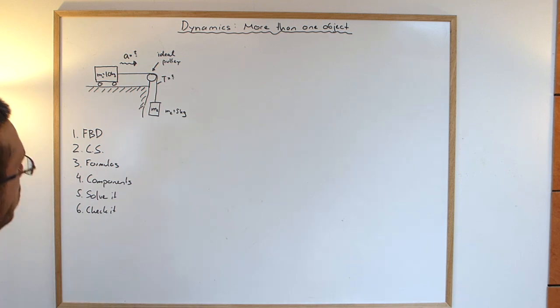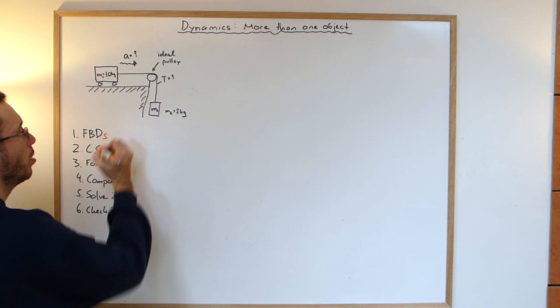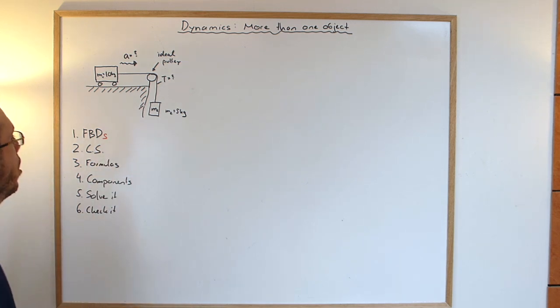So the main difference is that instead of having one free body diagram, we now have more than one free body diagram. We have one free body diagram per object.